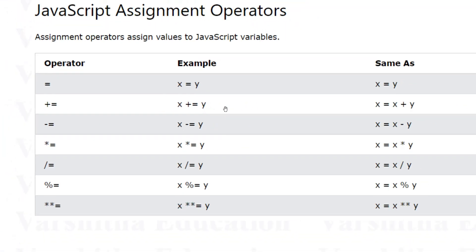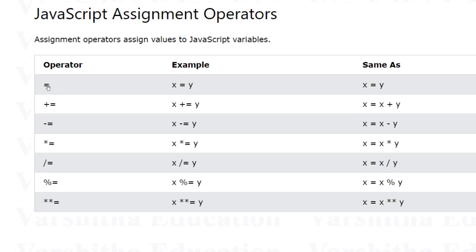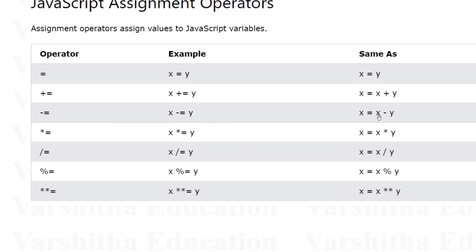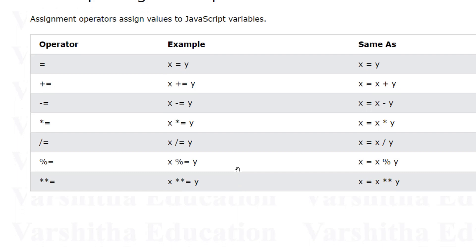For assignment operators: x equals y is basic assignment. x plus-equals y means x equals x plus y. x minus-equals y means x equals x minus y. x star-equals y means x equals x times y. x slash-equals y means x equals x divided by y. Modulus-equals and exponentiation-equals work similarly.